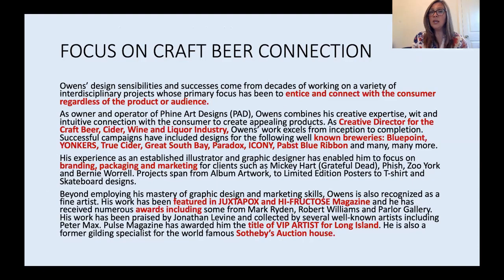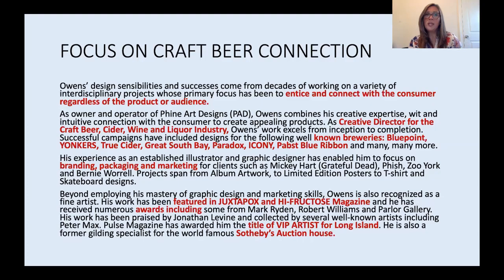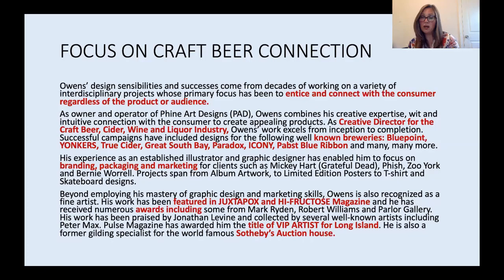Here's what we came up with. The details highlighted in red are the seeds I want you to focus on. First, I mention his name and describe how he is wonderful at enticing and connecting with the consumer regardless of the product or audience — that almost acknowledges his vast background in one sentence. In the second paragraph I get into very specific details about how his background relates to beer, wine, and liquor. Then I literally list them: Blue Point, Yonkers, True Cider, Great South Bay, and more. Right in that second paragraph you're getting name recognition about companies he has worked for.